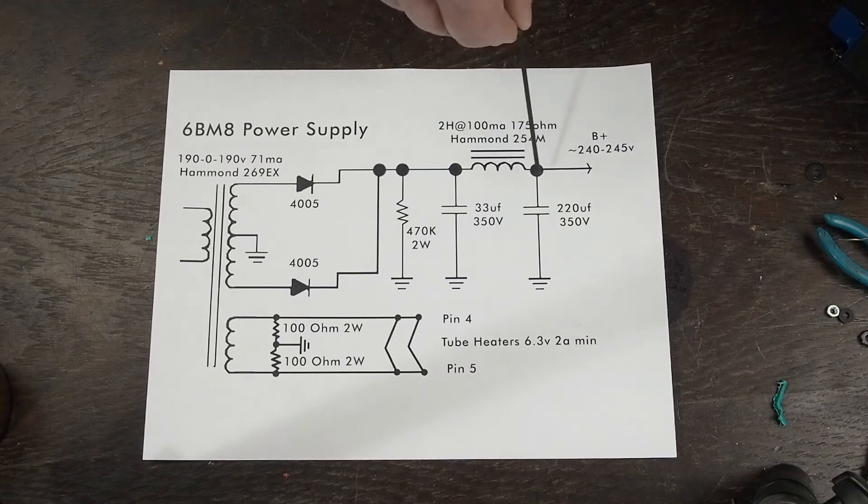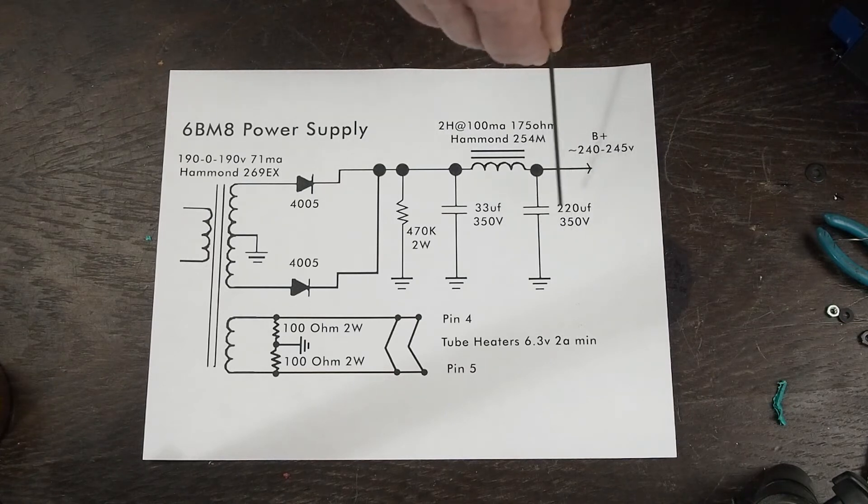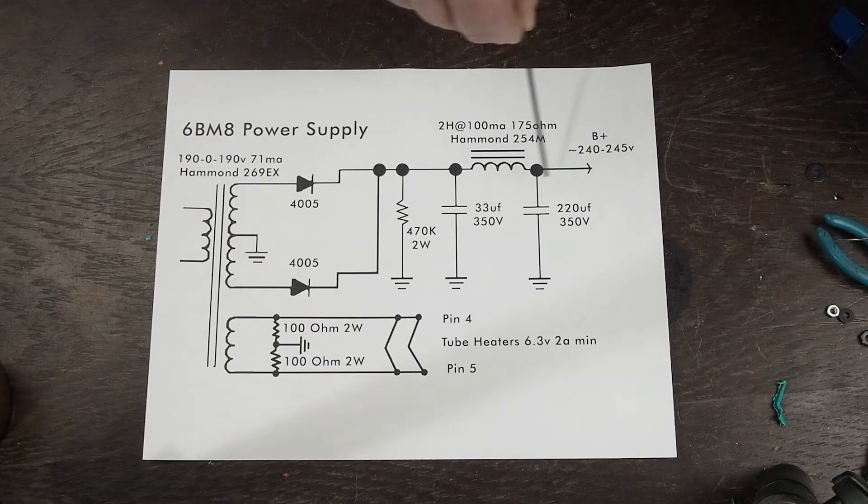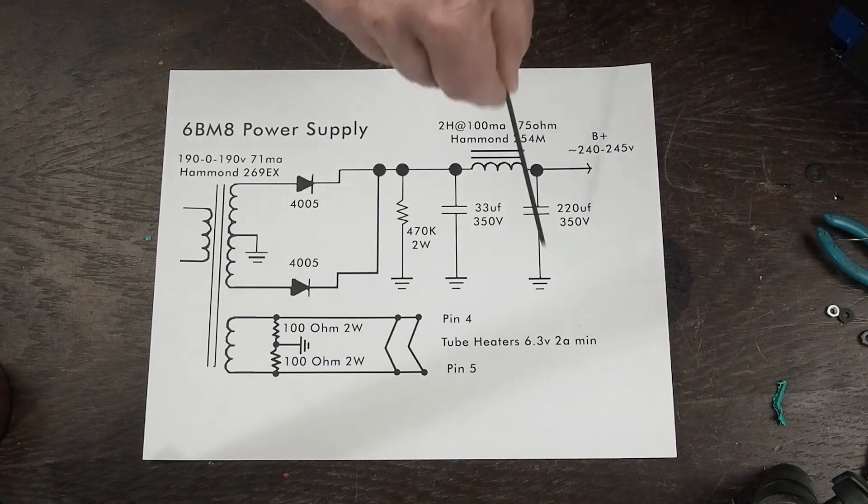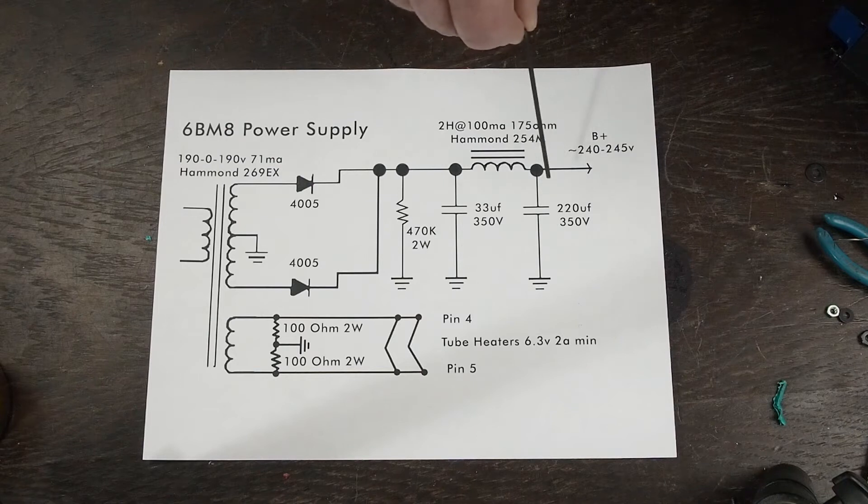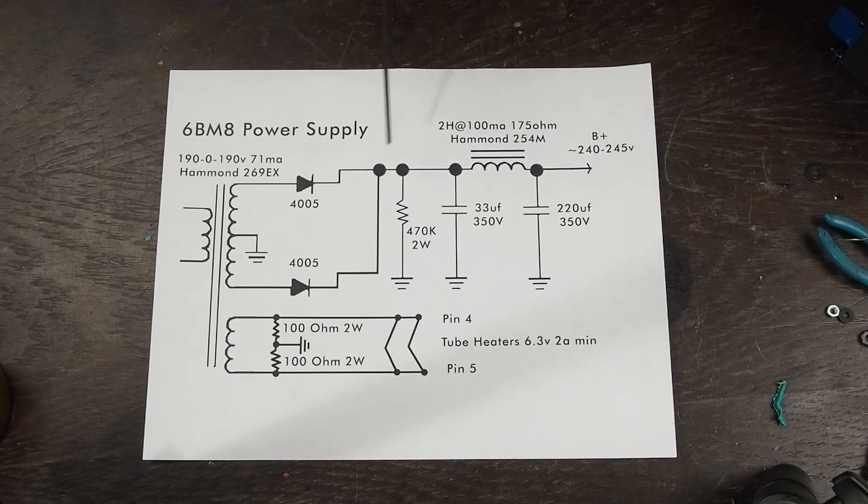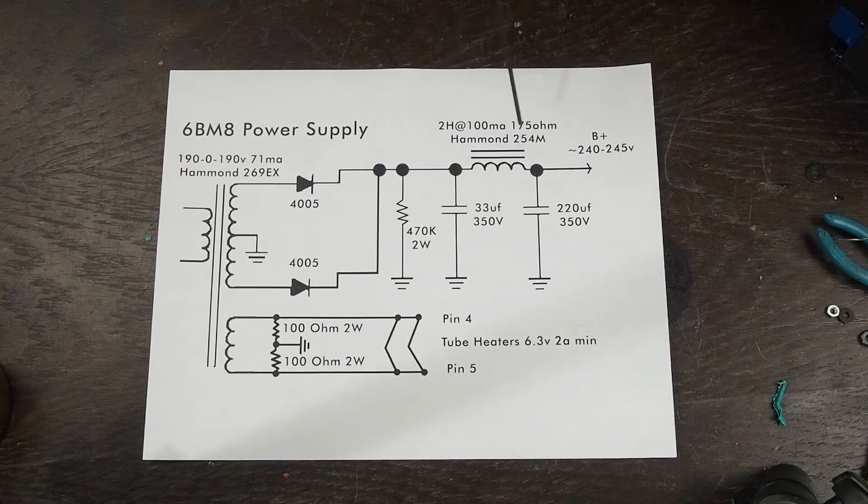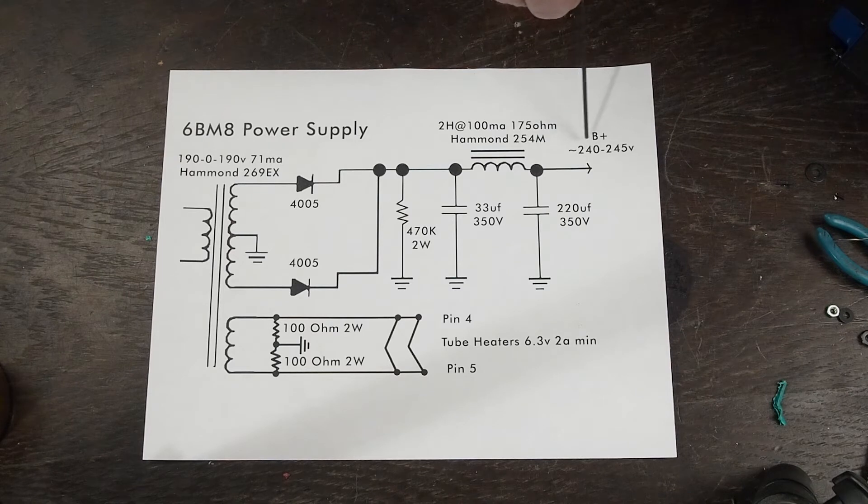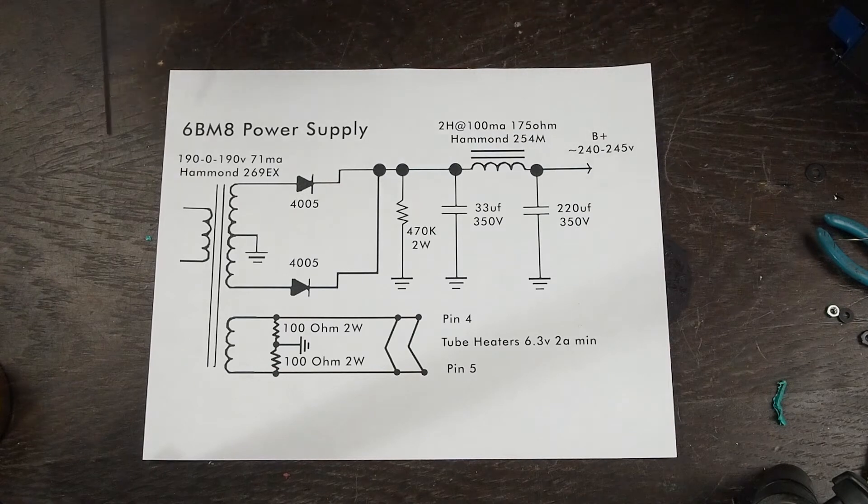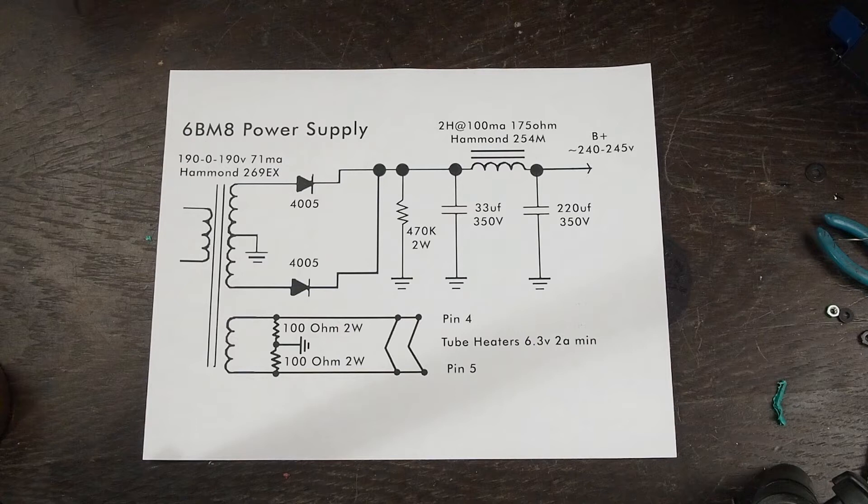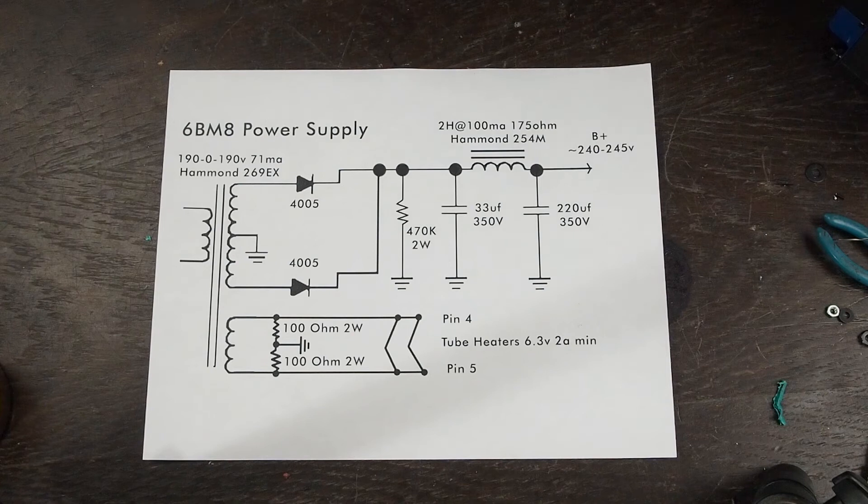After this choke, we have our large reservoir filtering capacitor, which is a 220UF 350 volt. And this is going to be what stores the current and also helps get the filtering on the B-plus as smooth as possible using this simple two capacitor, one choke filtering system. And then on the other end of this, we hope to get 240 to 245 volts B-plus. 250 would be fine. So hopefully, simmed out on the program that I mentioned earlier, this simmed out where this should be good. And it simmed out with very little ripple on the circuit.